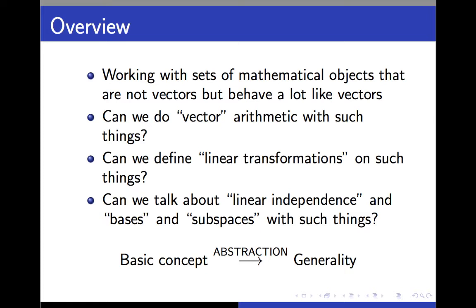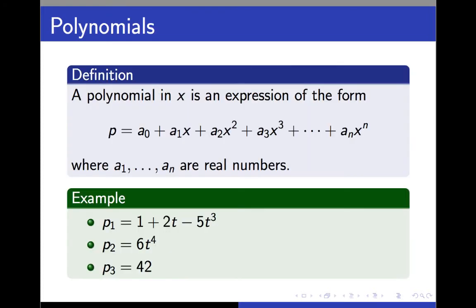So, without further talk, let's look at a set of objects that aren't vectors, but which have some strong parallels with vectors. A polynomial is a kind of mathematical expression that we're all familiar with. By definition, a polynomial in the variable x is an expression formed by taking constants, by which we mean real numbers, and multiplying them to powers of x, and we restrict the powers on x to be 0 or larger, and integers, so that no negative powers of x appear, and no non-integer powers of x appear.